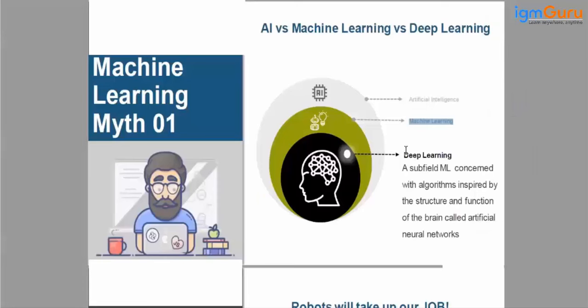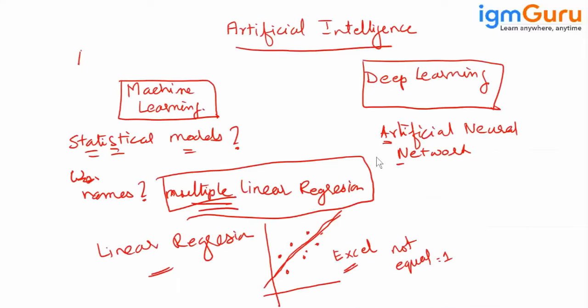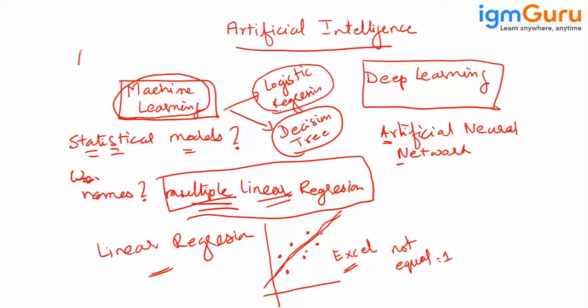So if you see here, friends, on my screen, when you are using statistical models, then you call it machine learning. Statistical models like linear regression, then logistic regression, statistical models like decision tree. These are all examples of different statistical models. So this is machine learning.